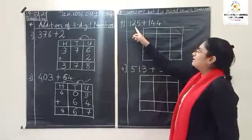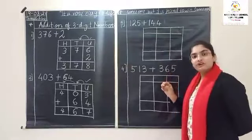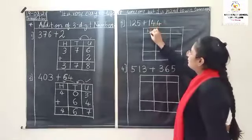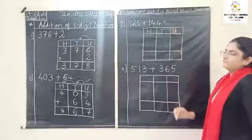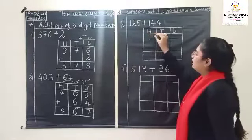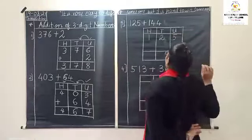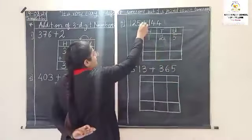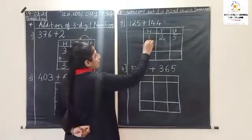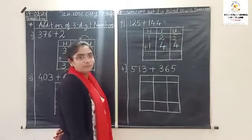One hundred and twenty-five plus one hundred and forty-four. First, arrange this number in the table: hundreds, tens and units. One hundred, so one will come here. And twenty-five — two in tens, five in units. Plus one hundred and forty-four — one in hundreds, four in tens, four in units. We have arranged the table.